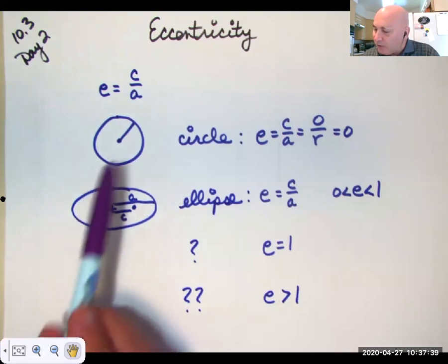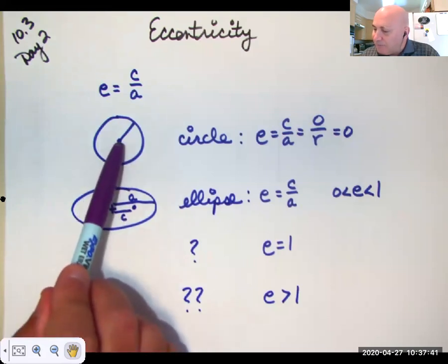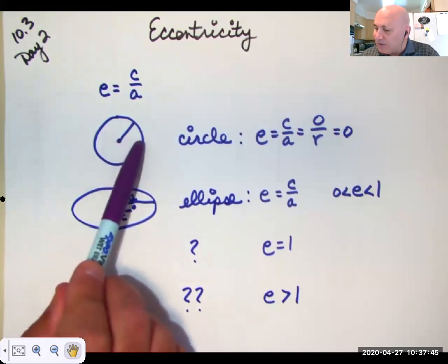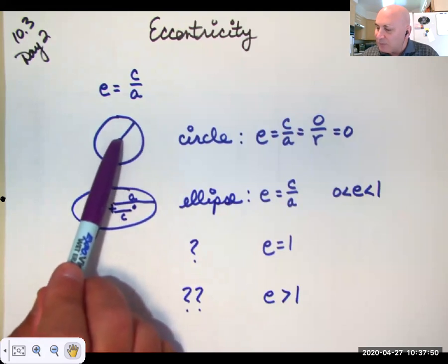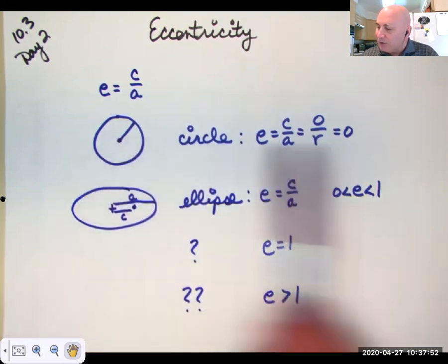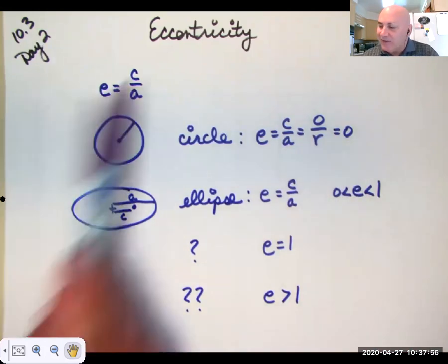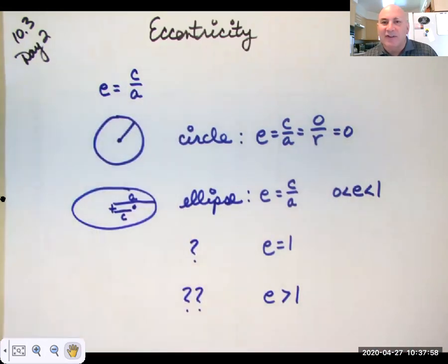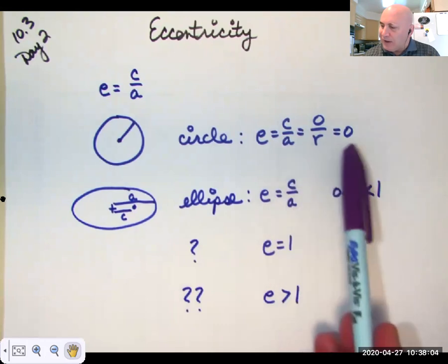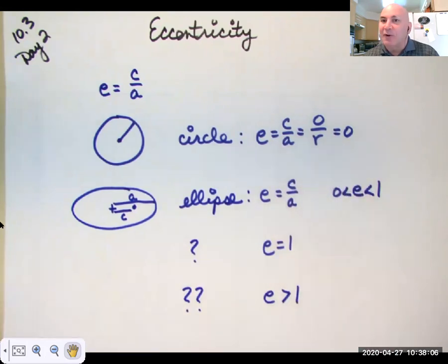So, if you look at a circle, the focus is the center, so the distance from the center out to any point on the circle is a, but the distance from the center to the focus is zero, so a circle has eccentricity zero. What do we mean when we say something is eccentric? Don't we mean it's a little bit weird in English? So, a circle has no eccentricity at all. It's a perfect shape, according to the Greeks, probably.